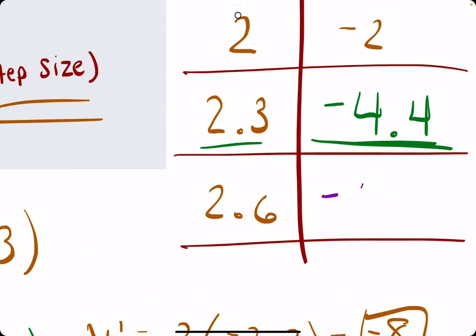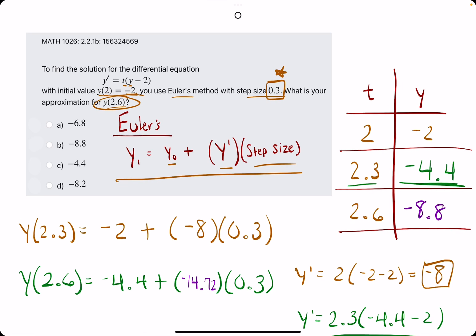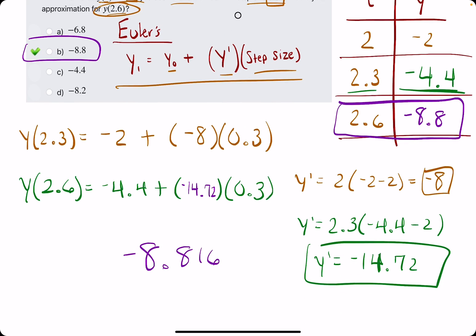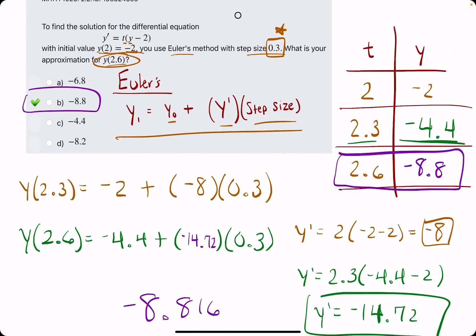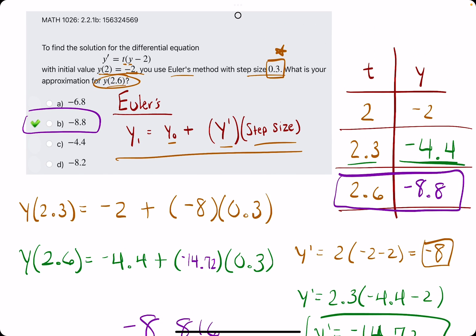So negative 8.8 is our approximated y value for the t value of 2.6. So we break out the eraser to see that b is our answer. I'll go ahead and work out one more example, probably a little bit faster in the next video, so feel free to check that second example out.